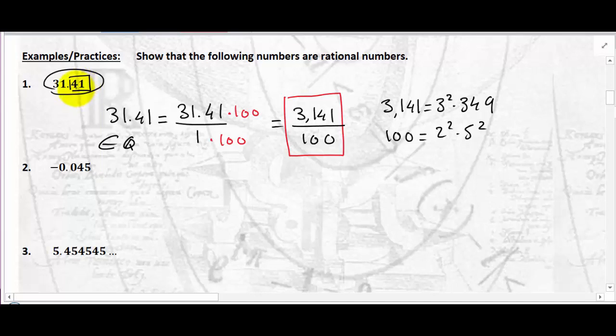What about if you have an infinite number of digits? I'll let you do example 2, and I'm going to move on to example 3. This is a decimal number with an infinite number of digits after the decimal point — the three dots indicate that the pattern repeats. When you have a repeating pattern like that, we denote it with a bar on top of the repeating digits. So 5.454545... is written as 5.45 with a bar over the 45.